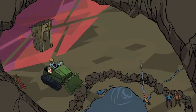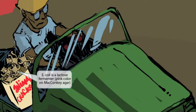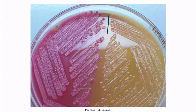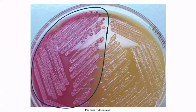If you look closely at the operator of this green machine, you can see that he has a bag full of monkey animal crackers. Monkey sounds like MacConkey, so we'll be using monkeys to represent MacConkey agar. The monkey should help you remember that E. coli is a lactose fermenter and results in a pink color on MacConkey agar. The pink color occurs as lactose fermenting organisms produce acid from the lactose, which lowers the pH of the agar and causes the pH indicator to turn pink.